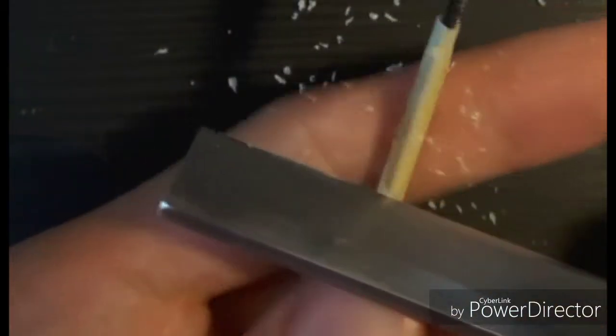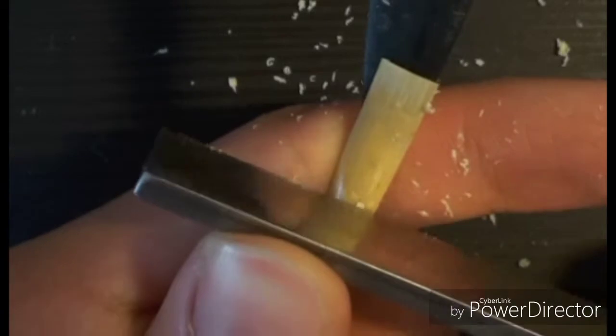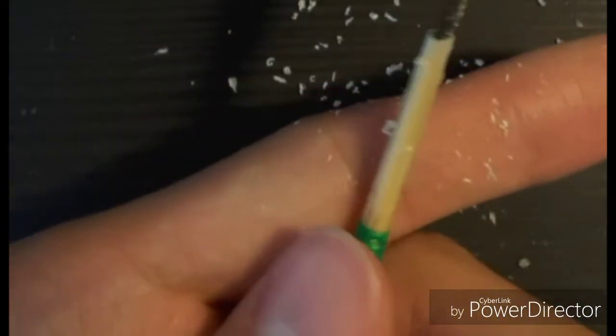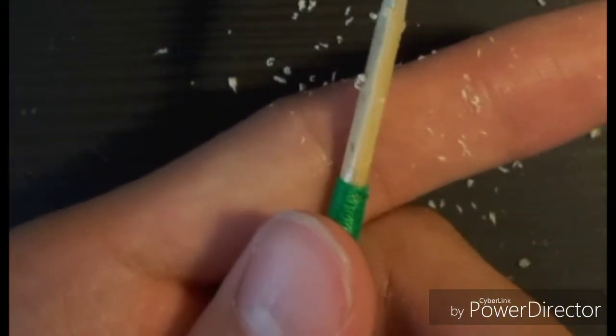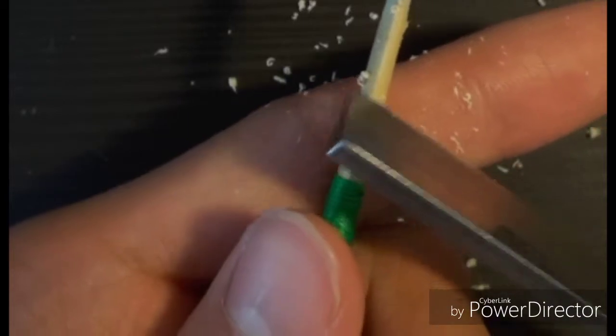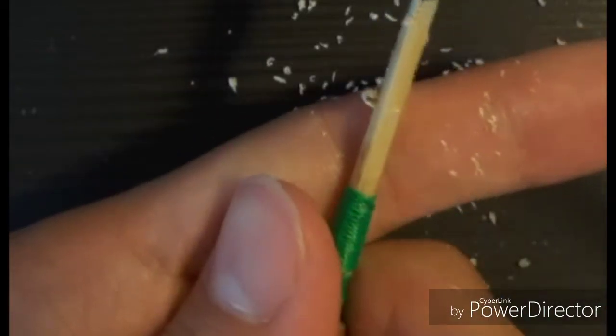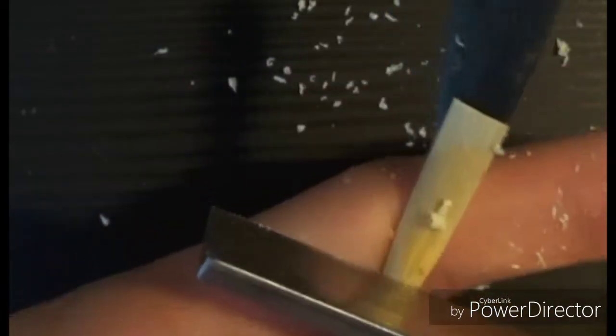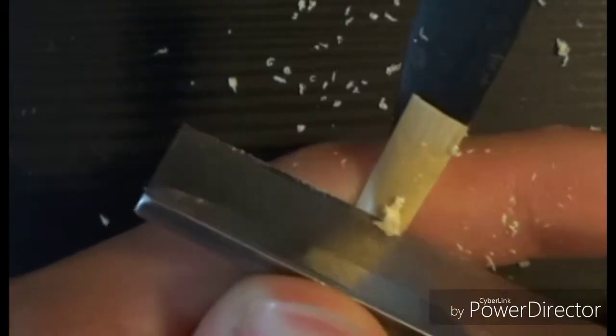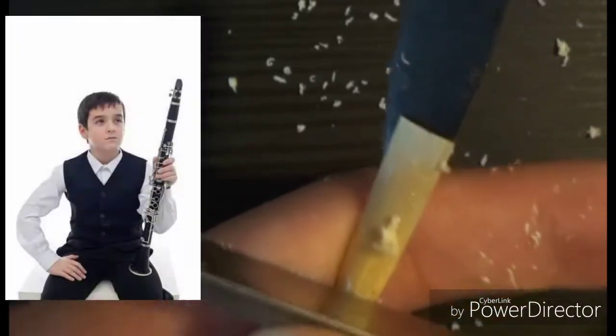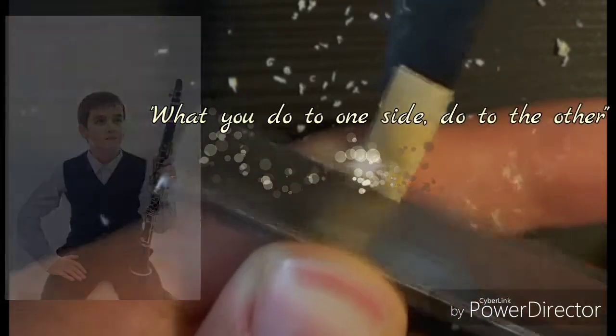Starting on the second side, I'm going to do the exact same thing as the first side. Make one light scrape to see how long I want my back to be. That one went a little too far. I'm comparing across the sides. Symmetry across the two halves of one blade is not so important, but the golden rule of reed making: what you do to one side, do to the other.